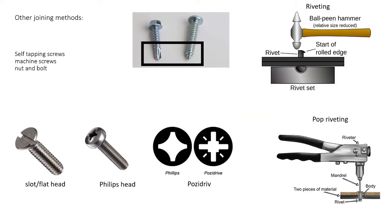Other metal joining methods include self-tapping screws, machine screws, nuts, bolts, and riveting. Self-tapping screws make the thread themselves as you insert them into the material, rather than requiring you to manually cut a thread using a tap and die. Riveting is sometimes described as like stapling for metal — you used to drill two holes, insert a rivet, hit the top to flatten it, and that would join the two metals together.